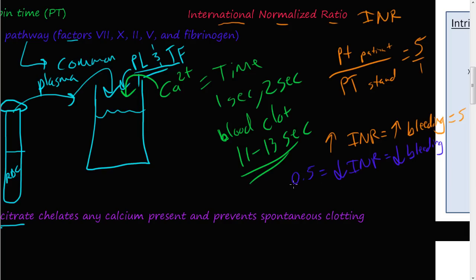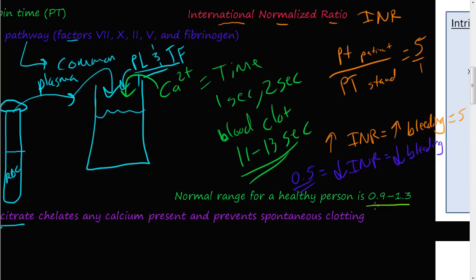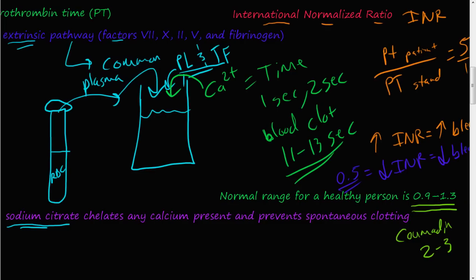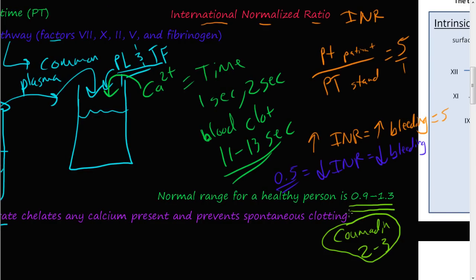A low INR promotes blood clot formation in your veins, arteries, or cardiovascular system very quickly — and that's not good either, because blood clots can form during normal physiology. The normal INR range for a healthy person is 0.9 to 1.3. For someone on Coumadin, the target is 2 to 3 — meaning the Coumadin dosage is appropriate if the INR falls in that range.